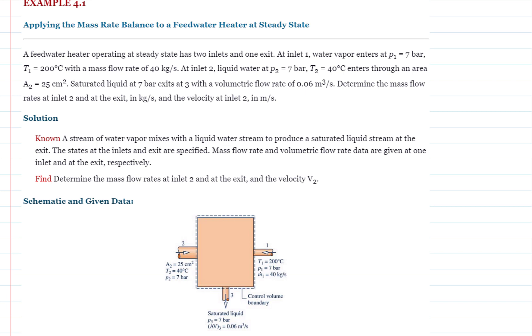Example 4.1. A feedwater heater operating at steady state has two inlets and one exit. At inlet 1, water vapor enters at pressure 7 bar and temperature 200 degrees Celsius with a mass flow rate of 40 kg per second. At inlet 2, liquid water at pressure 7 bar and temperature 40 degrees Celsius enters through an area 25 cm². Saturated liquid at 7 bar exits at 3 with a volumetric flow rate of 0.06 m³ per second. Determine the mass flow rate at inlet 2 and exit in kg per second. And velocity at inlet 2 in m/s.